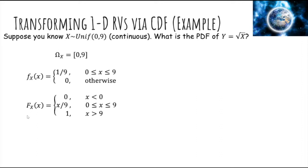The CDF can be derived by taking the integral of the pdf. What about the range of Y? Since Y is the square root of X, the smallest value is √0 = 0, and the largest value is √9 = 3. So that's the range of Y.